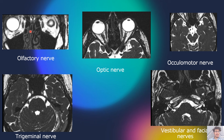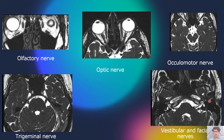On MRI sequences, we can identify the olfactory nerve in the olfactory groove, the optic nerve, the third cranial nerve (oculomotor) at the level of the midbrain, the fifth cranial nerve (trigeminal) at the level of the pons, and the vestibulocochlear and facial nerves at the level of the cerebellopontine angle passing through the internal auditory canal.